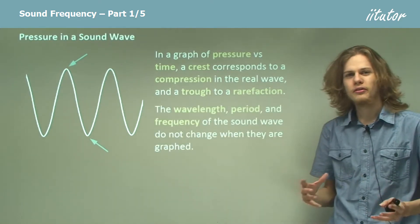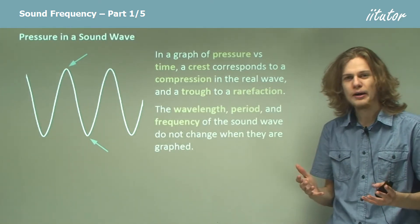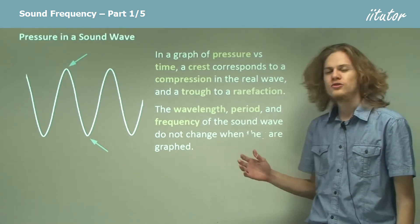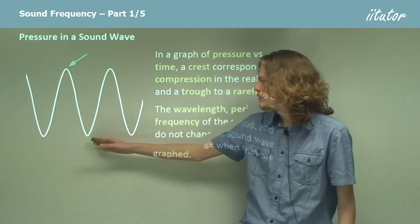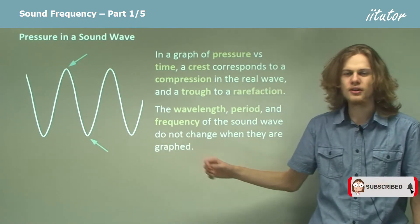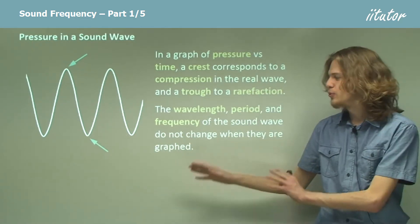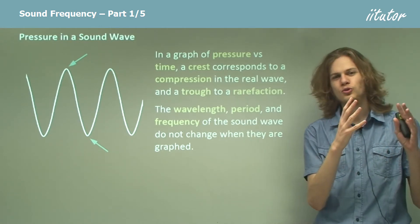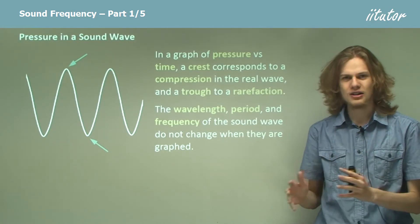So the wavelength, the period, the frequency, anything that depends on time, won't change when you graph it. So that means that the distance between two troughs or two crests will be the same on this graph as the distance in real life between two compressions or two rarefactions.